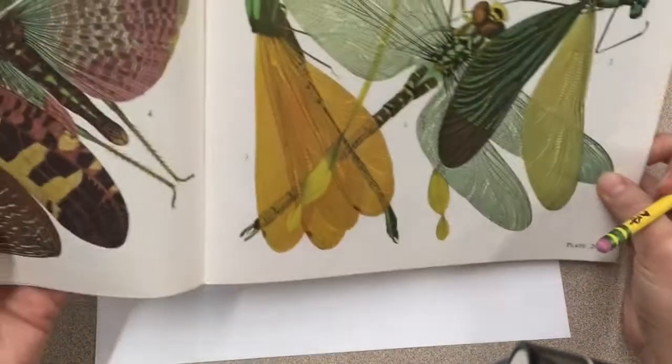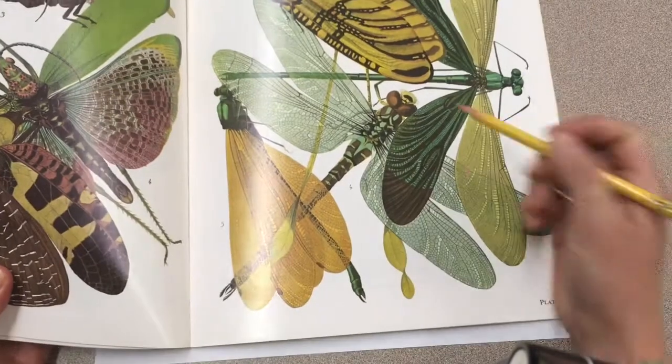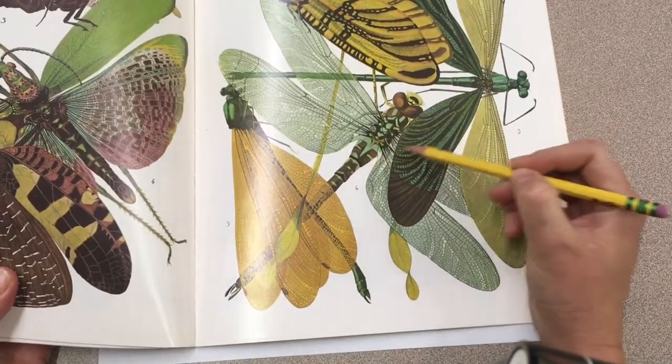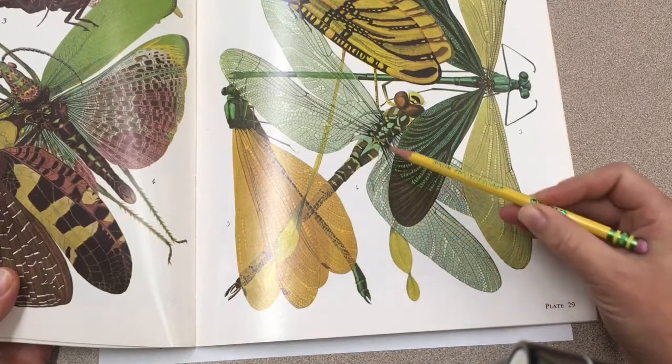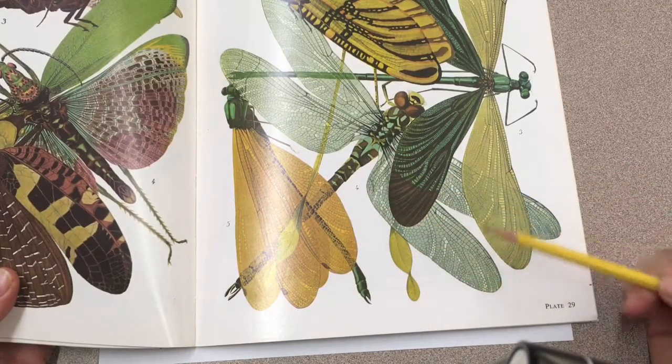First thing I will do is look at the shape of this dragonfly and figure out what geometric shapes. So circles, this could be a rectangle, long rectangle, and then these could be either long rectangles or triangles put together.